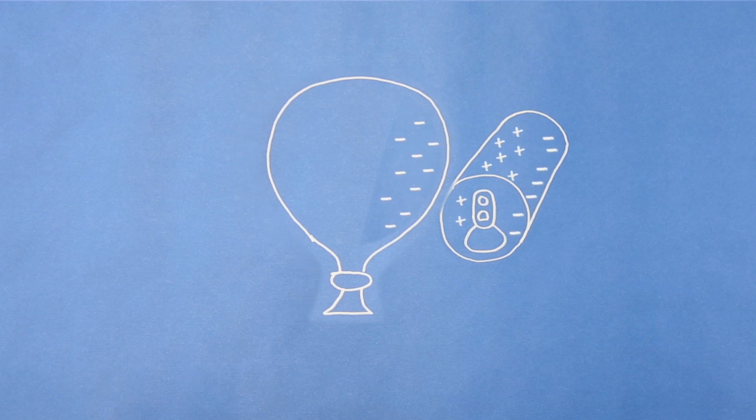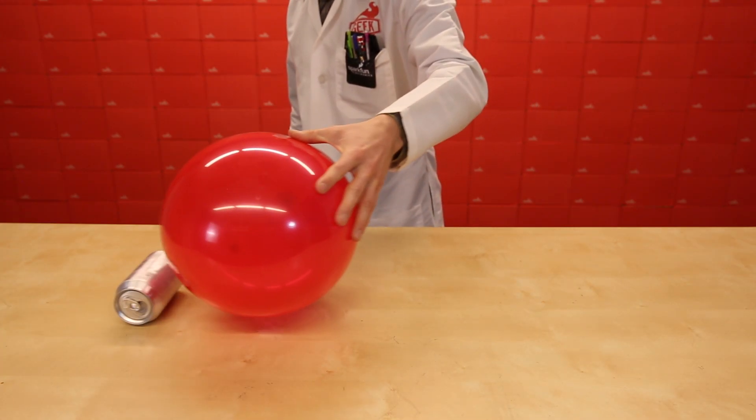Since the positive charges are closer to the balloon than the negative charges, the attractive force is greater than the repulsive force. This results in a net force that pulls the can toward the balloon. Let's see that again in instant replay.